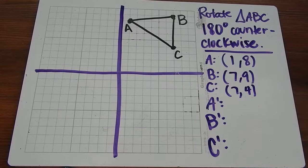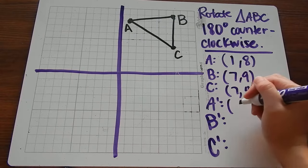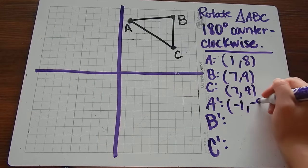Now we're going to use our notes that we just took over rotation to label our new points, and then we can actually put them on our coordinate grid. So for 180 degrees counterclockwise, our new point is going to be (-x, -y). So we're just taking the x and the y and making them negative. So my A prime is going to be (-1, -8).